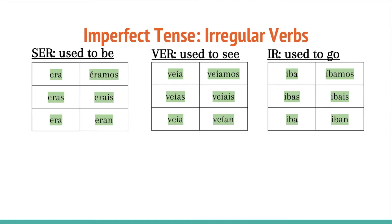These are the only three irregular verbs that you're going to have to worry about. Here, we don't see just the endings — you see the words written fully out.